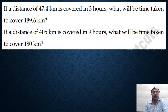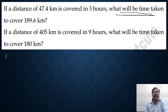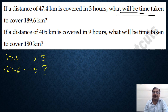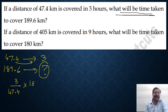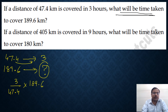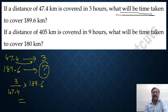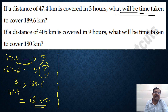If a distance of 47.4 kilometers is covered in 3 hours, what will be the time taken to cover 189.6 kilometers? Time taken is the fourth variable. Write it as: 47.4 km in 3 hours, so 189.6 km in how many hours? Take 47.4 to the denominator: 3 upon 47.4, multiply by 189.6 to get the final answer. In the exam, you need to be really smart in handling decimals. The answer is 12 hours — distance increased, so time increases too.